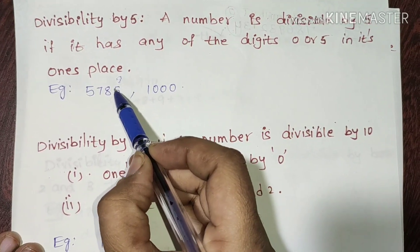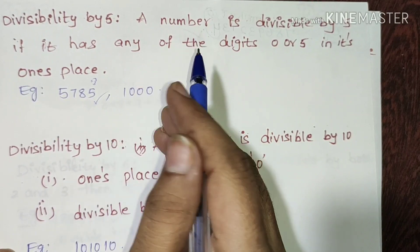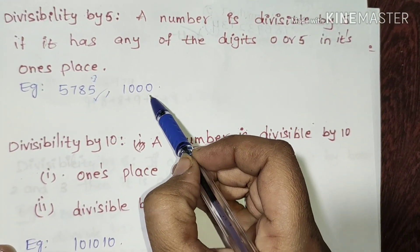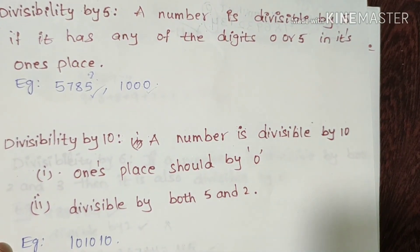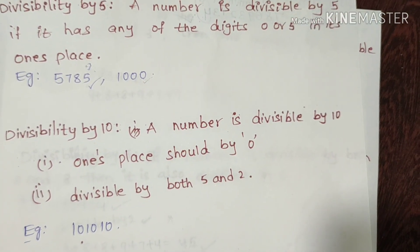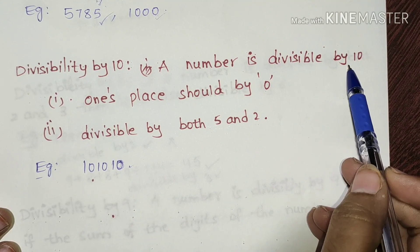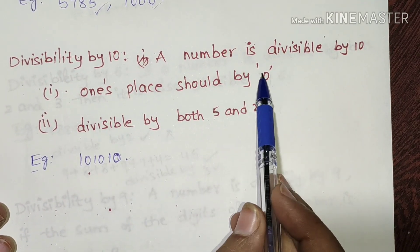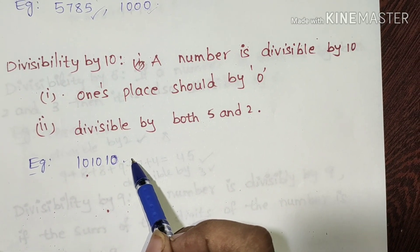Divisibility by 5: the ones place digit must be either 0 or 5 for a number to be divisible by 5. Divisibility by 10: the ones place digit must be 0. These are two related rules for divisibility by 5 and 10.